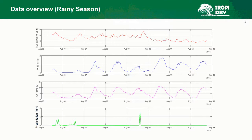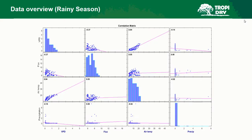The data overview for the rainy season shows flux, VPD, air temperature, and precipitation. MATLAB was used to find a correlation matrix, and the relationship can be seen in the next slide — we have this for a different season as well. The data was correlated between two different seasons. As you can see, VPD has a negative correlation with flux, air temperature has a slight positive correlation with flux, and precipitation has a slight positive correlation with flux.